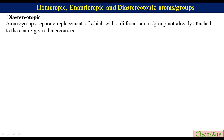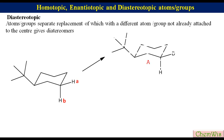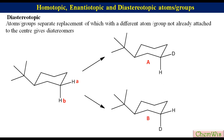Let's have the example of tert-butylcyclohexane. In this, we have to find out the relation between indicated hydrogens A and B. Replacement of HA with deuterium gives structure A, while replacement of HB with deuterium gives structure B. Structures A and B are diastereomers, so HA and HB are diastereotopic.